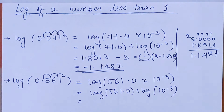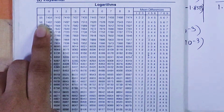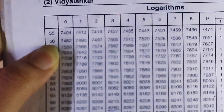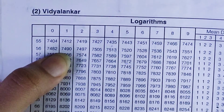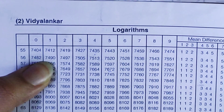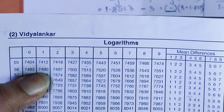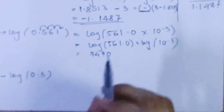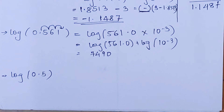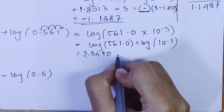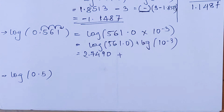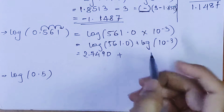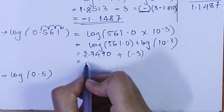Find log(561.0) from the table: look up 56 and 1, which gives 7490. Count the digits before the decimal in 561.0 — there are 3, so 3 − 1 = 2, giving 2.7490. For the 10^(−3) part: log(10^m) = m, and m = −3, so log(10^(−3)) = −3.